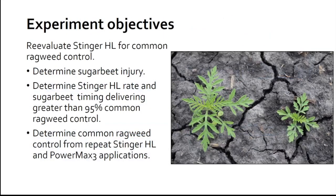Our experiment objectives were: one, to determine sugar beet injury; two, to determine the Stinger HL rate and sugar beet timing delivering greater than 95% common ragweed control; and three, to determine common ragweed control from repeat Stinger HL and PowerMax III applications.